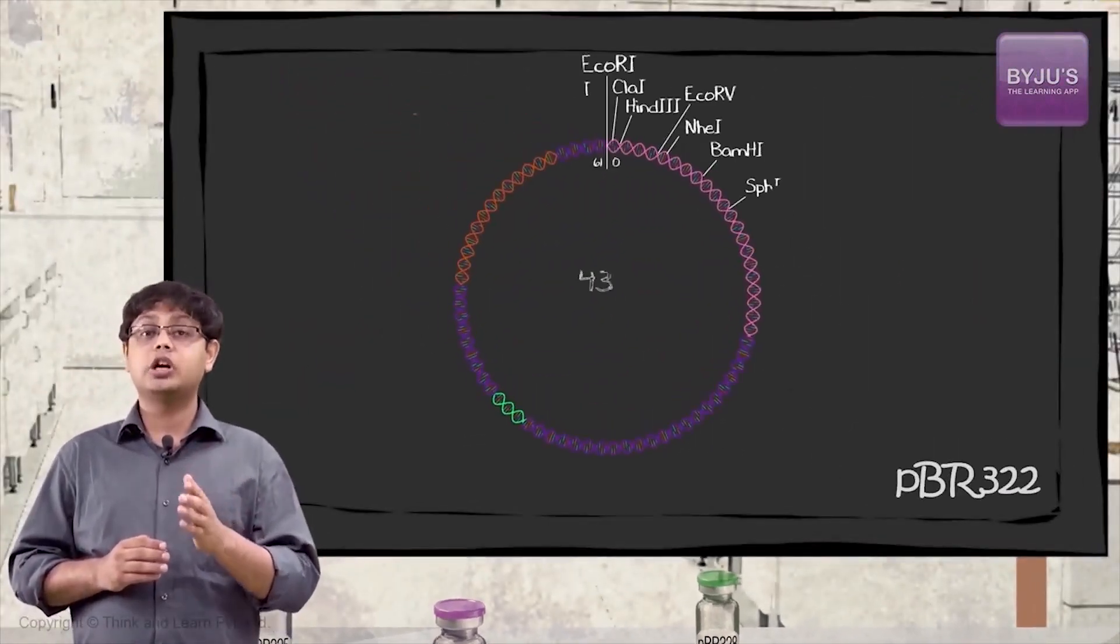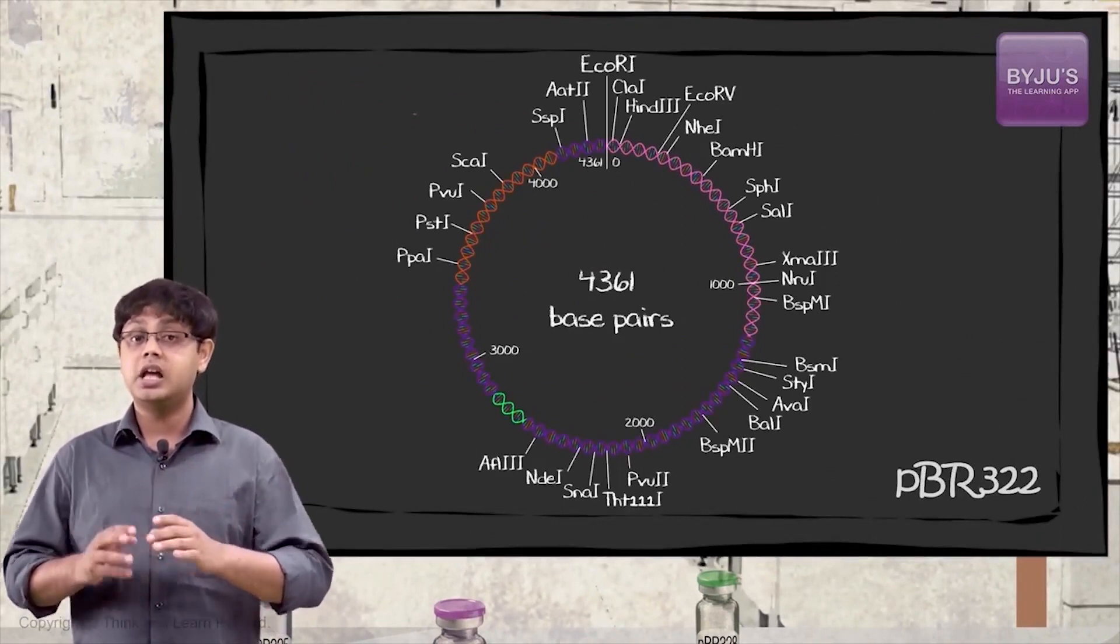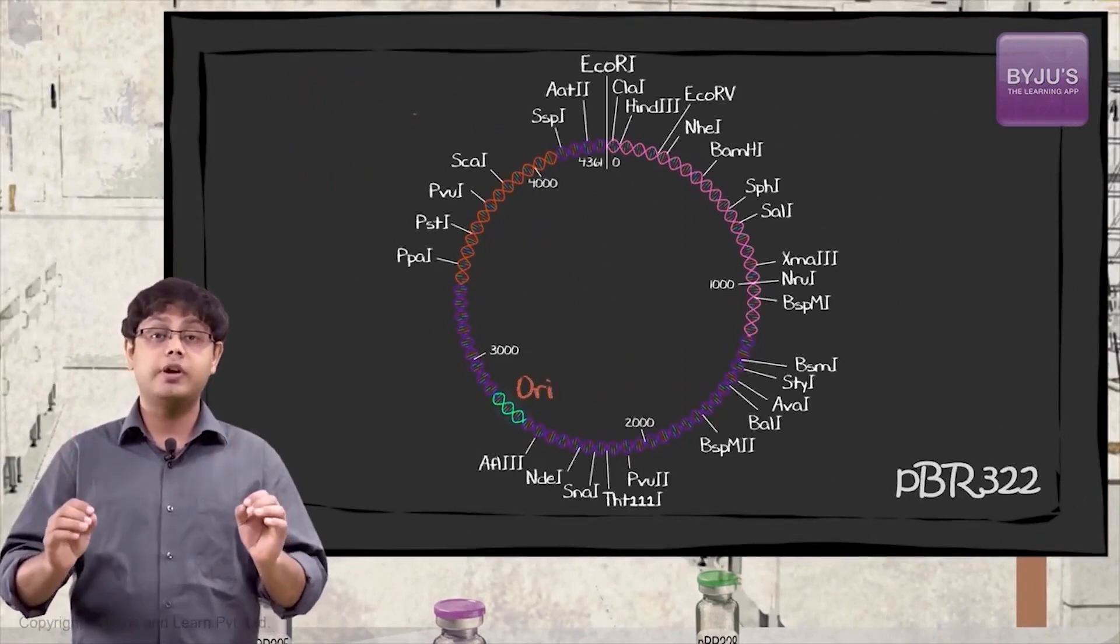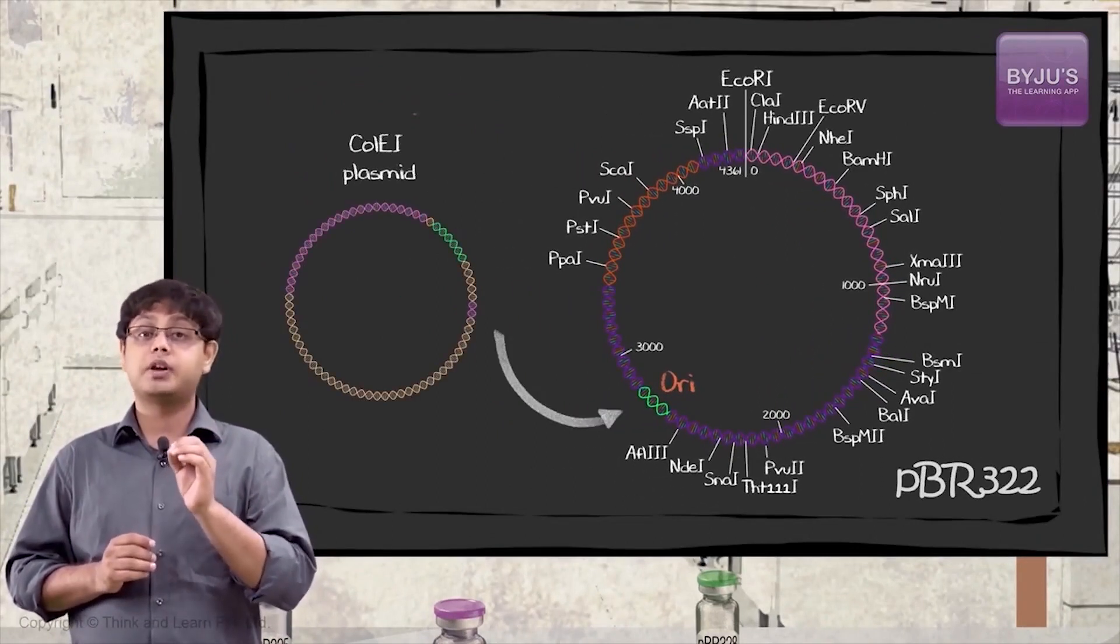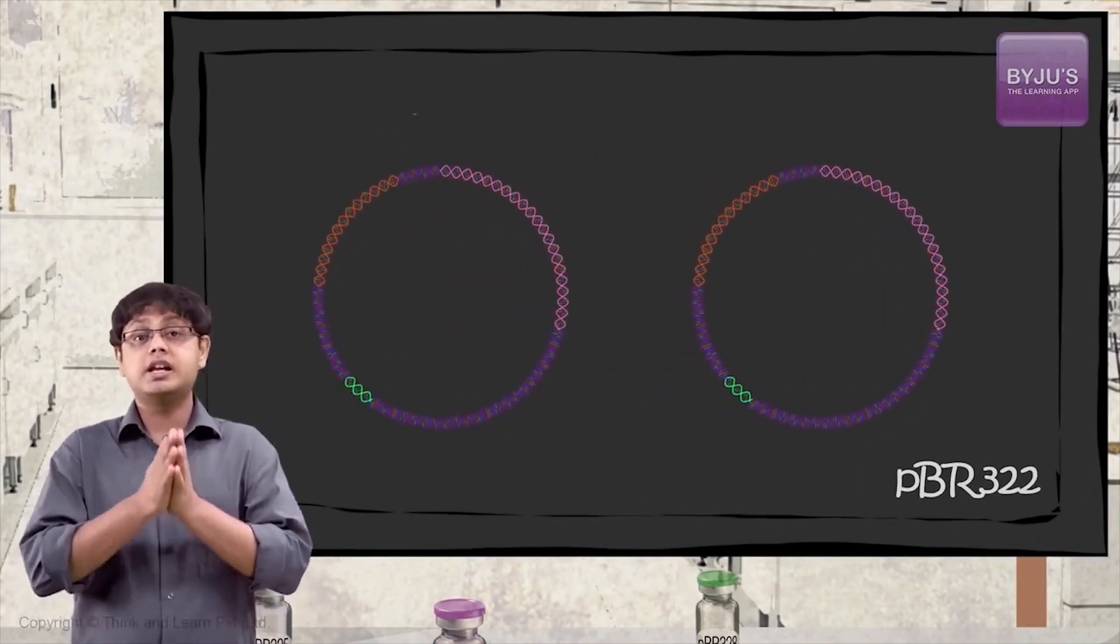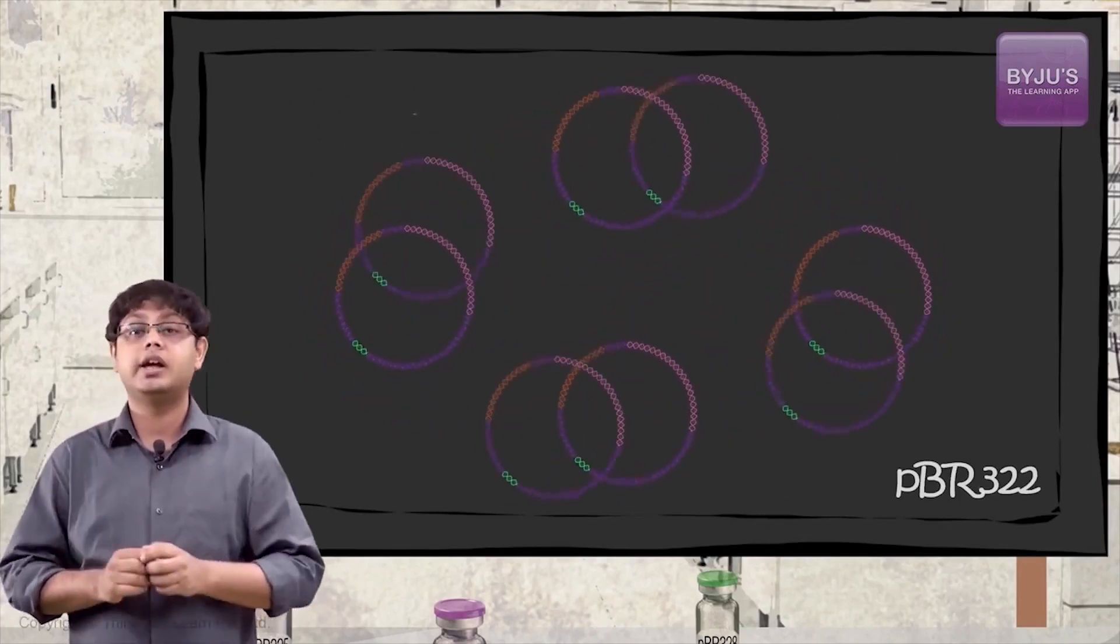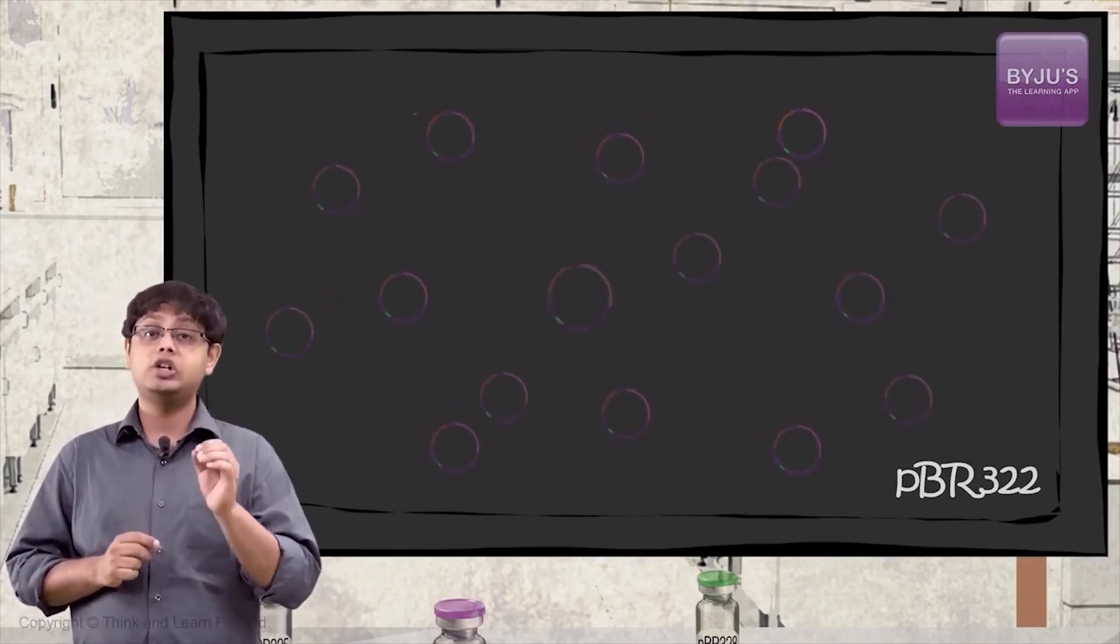PBR322 is around 4,300 base pairs in length and harbors the origin of replication, or Ori, which is derived from an E. coli-specific plasmid, which means that this plasmid can replicate inside E. coli and has a high copy number.